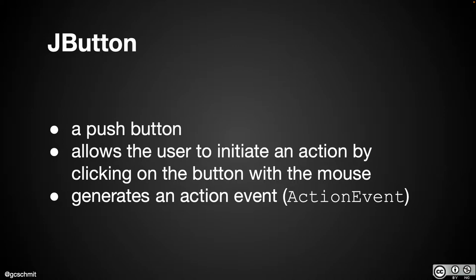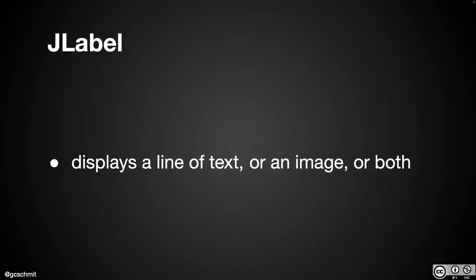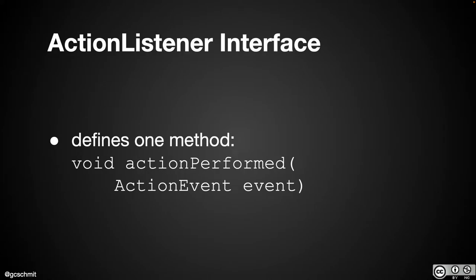We're going to use a couple of new classes. The JButton class creates a push button on the screen — it allows the user to click on it, and when they click on it, it generates an ActionEvent that we can listen to. We're also going to use the JLabel class, which displays a line of text or an image or both. It is an indicator, not a control — the user cannot interact with it. We're going to implement the ActionListener interface, which has only one method: actionPerformed, which takes as one parameter the event that was generated.